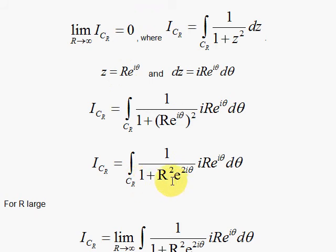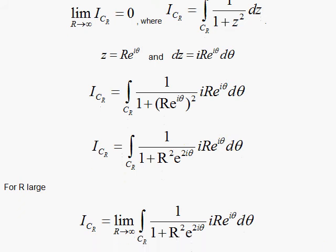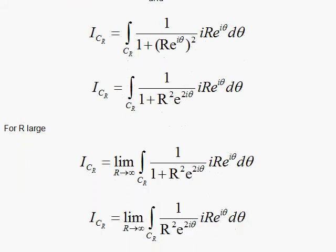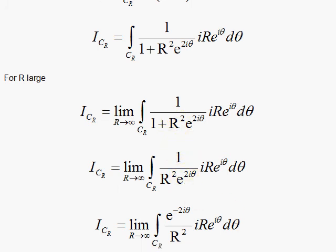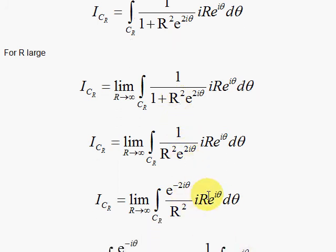I get then 1 plus R squared e^{2iθ}, and notice here for large R, as R goes to infinity, I can throw away 1 here. This R is going to be super big. And then I notice that this R here will cancel one of the R's down here.